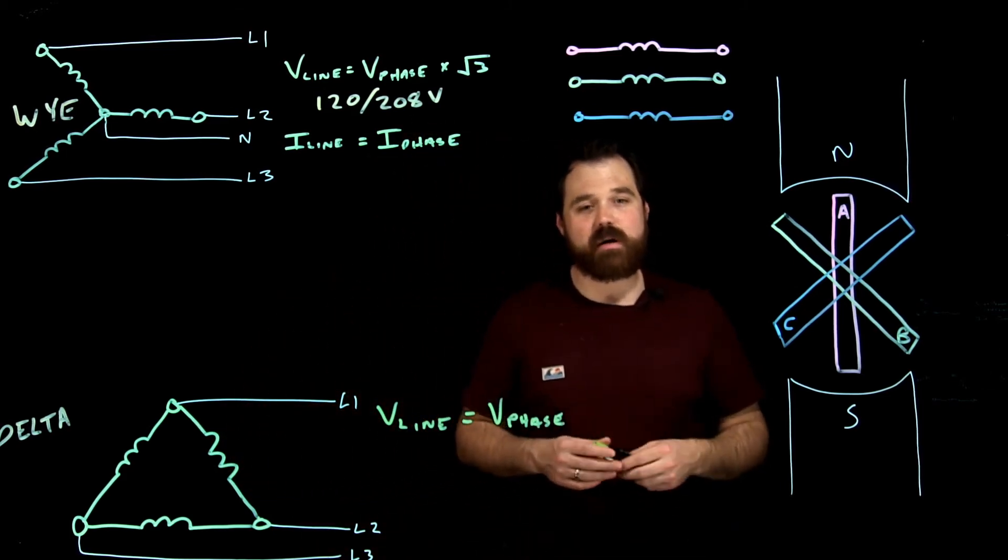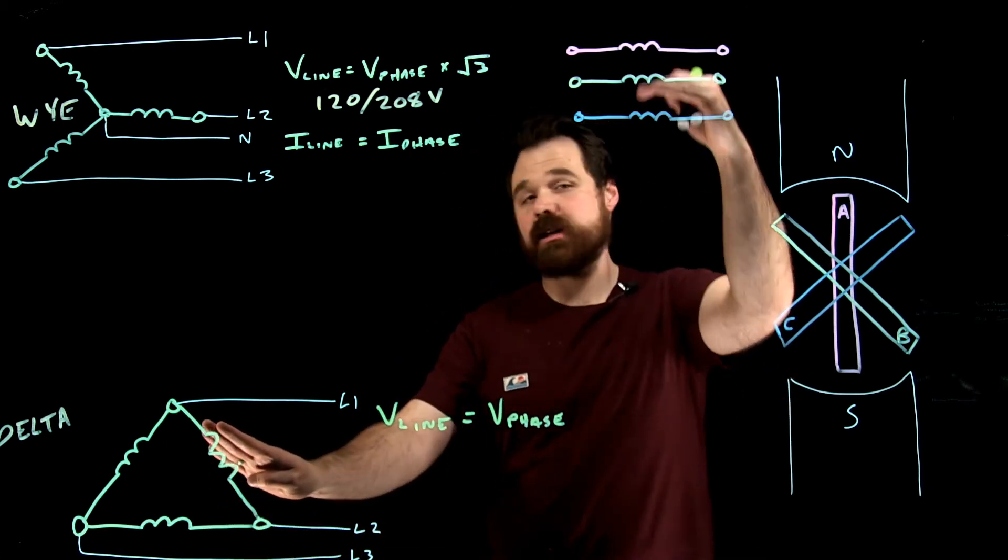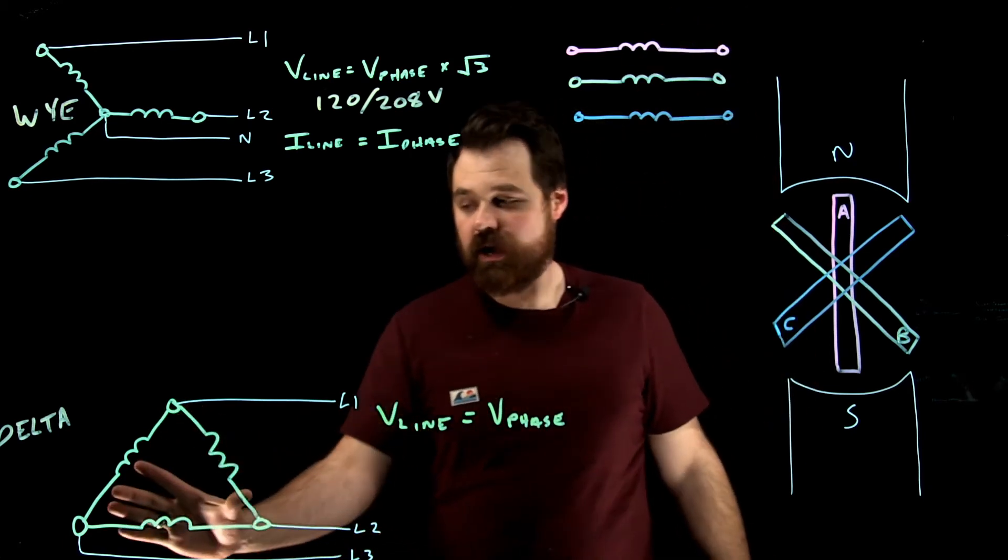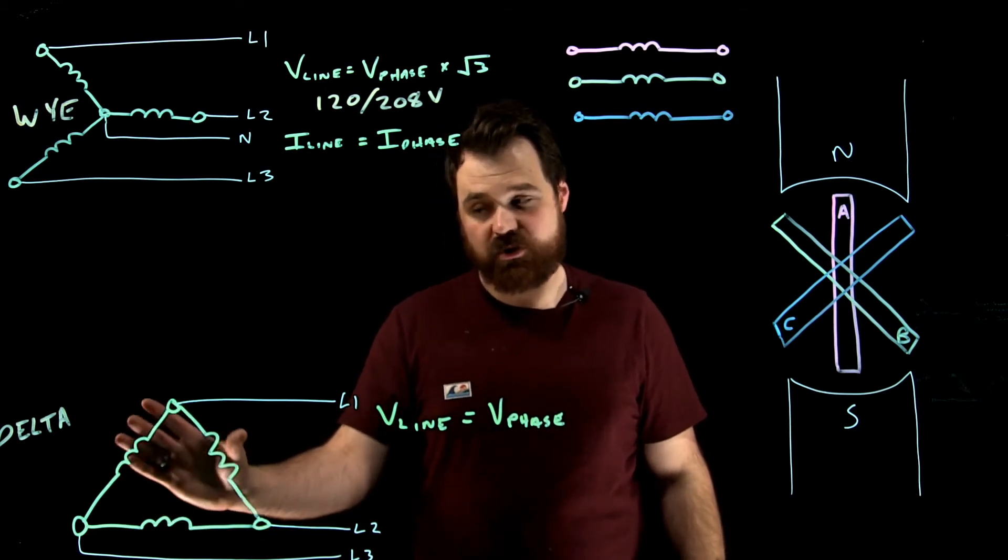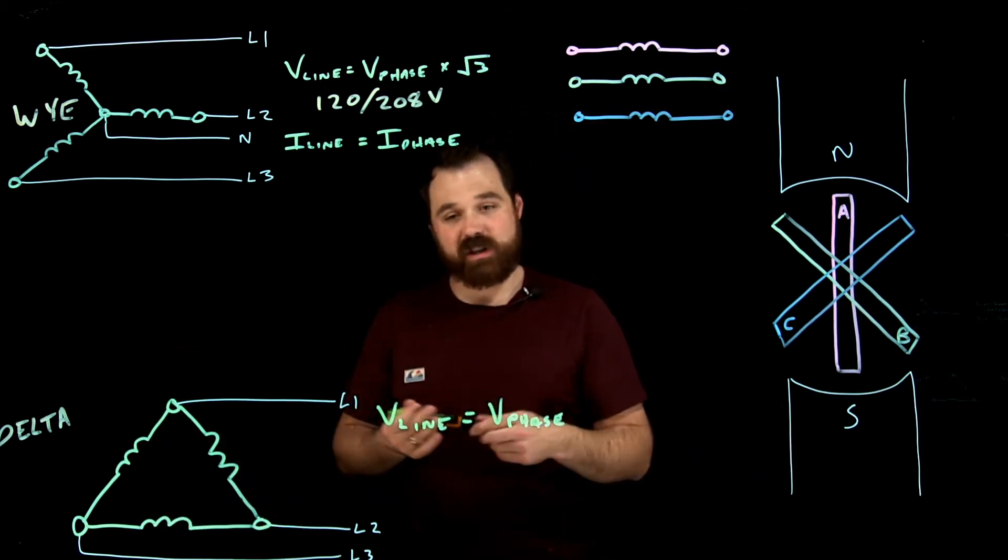What we also see here though, however, is yes, we could have the same amount of current going through the phase, just like each one of these will be rated for an amount of current. But because of the way this is, we would have two phases joining together, which allows us to increase our line current.